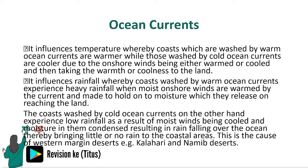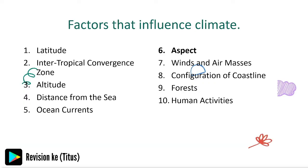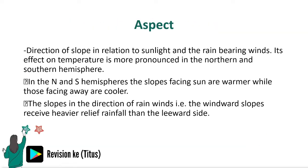At this point I'll take a short break to give you a hint: while you study this topic, try to relate what we are discussing here with fishing, especially when we are studying the international fishing grounds. Let's continue. The aspect — direction of slope in relation to sunlight and rain-bearing winds — has its effect on temperature, which is more pronounced in the northern and southern hemispheres.